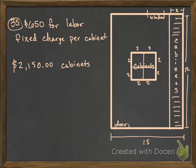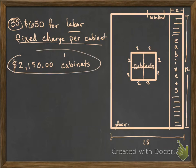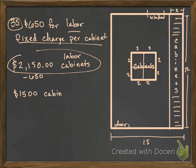Problem 35 says that CC Installations estimated cost of $650 for labor and a fixed charge per cabinet. The estimate she gets for building — the labor and the charge for the cabinets — totals out to be a given amount. So just the cabinets is going to be that total subtracted from $650, which gives us $1,500 for only the cabinets themselves for the installation.